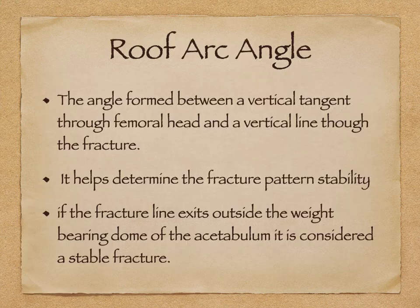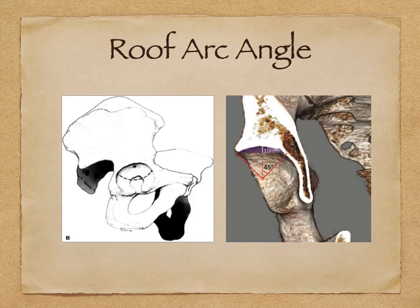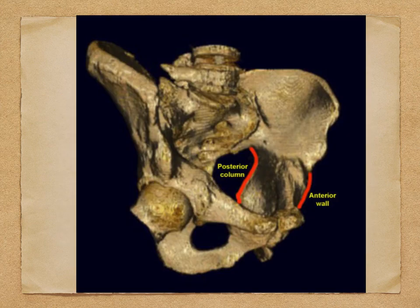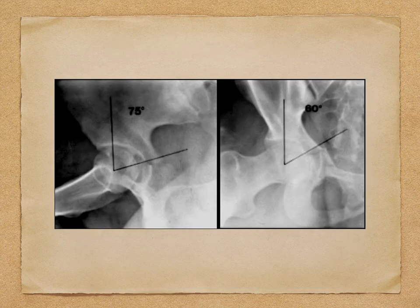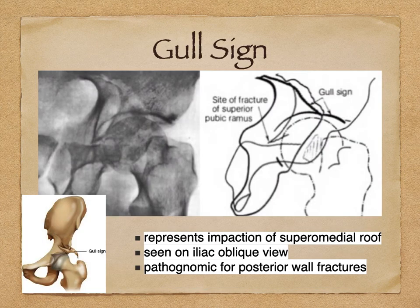The iliac oblique view is meant to tell you about the posterior column. If there is a fracture line here on that view, it suggests a posterior wall fracture.